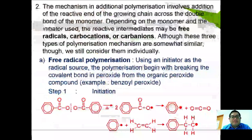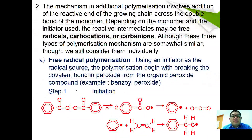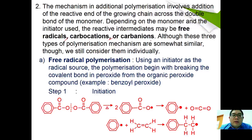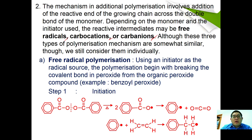The mechanism in additional polymerizations involves the addition of the reacting or growing chain across the double bond of a monomer. Depending on the monomer and the initiator, the reactive intermediate may be a free radical, a carbocation, or a carbanion. Although these three types of polymerization mechanisms are somewhat similar, we will consider them individually.